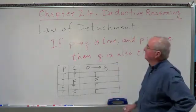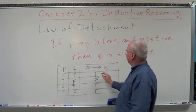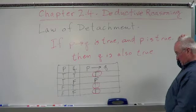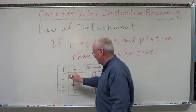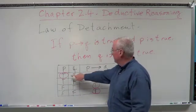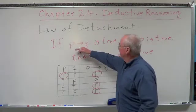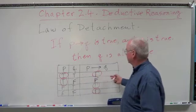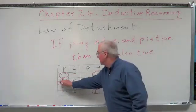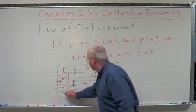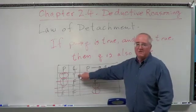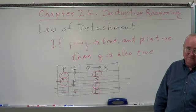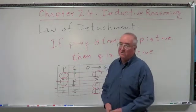Now let's look at this carefully. If P then Q is true — so which rows are we looking at? This one, this one, and this one. And P is true, so we're looking at this one and this one. If the conditional is true and P is true, the only situation that satisfies both is where P is true and Q is true. So if P and Q are both true, you can just say Q.